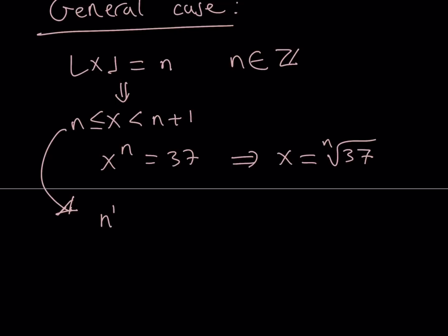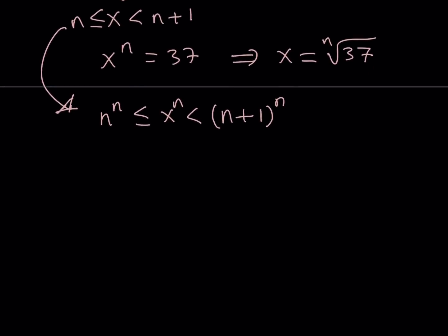So we get n to the n less than or equal to x, and that's less than or equal to n plus 1 to the power n. This is kind of like an interesting inequality because we're talking about some type of growth here. You can talk about the limit as n approaches infinity, and so on and so forth. There are some interesting results that arise from here, but we're not going to go into details because I want to keep this video short. So this is my chain of inequalities. Let's go ahead and replace x to the nth. Oh, I forgot to raise this one. Let's replace that with 37.